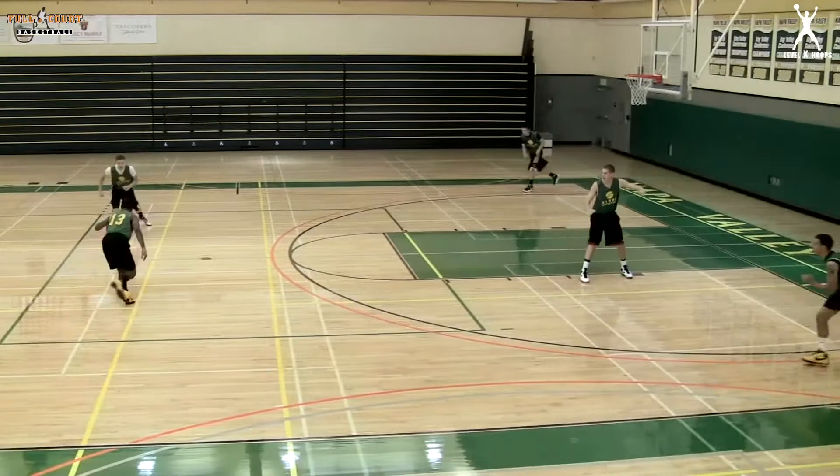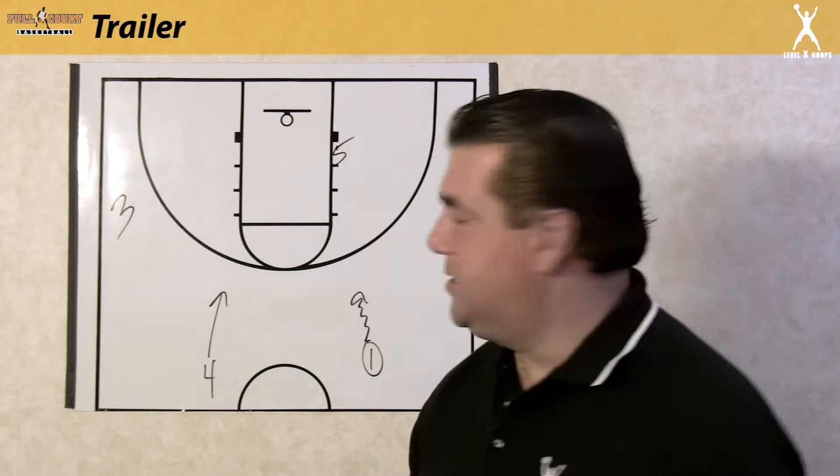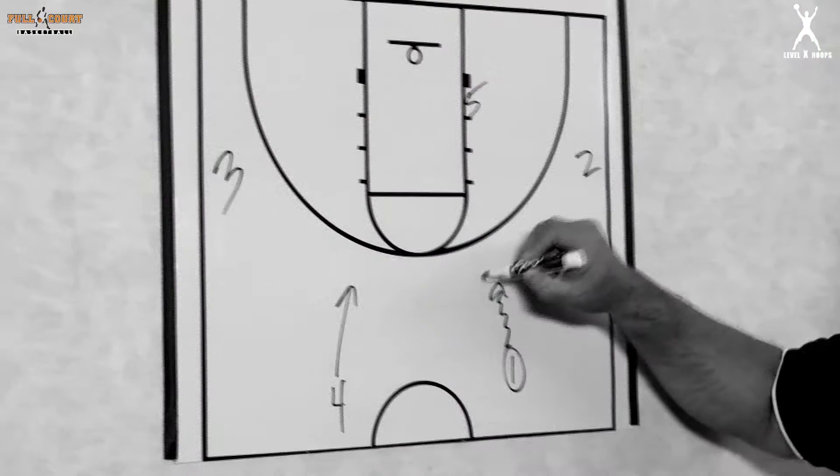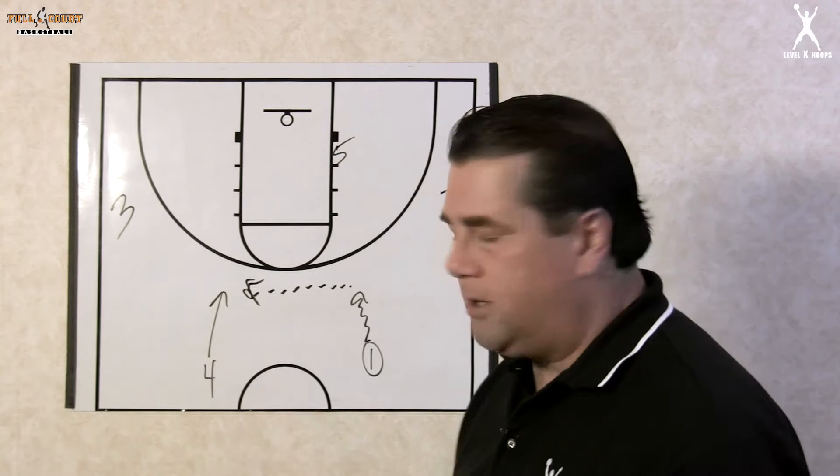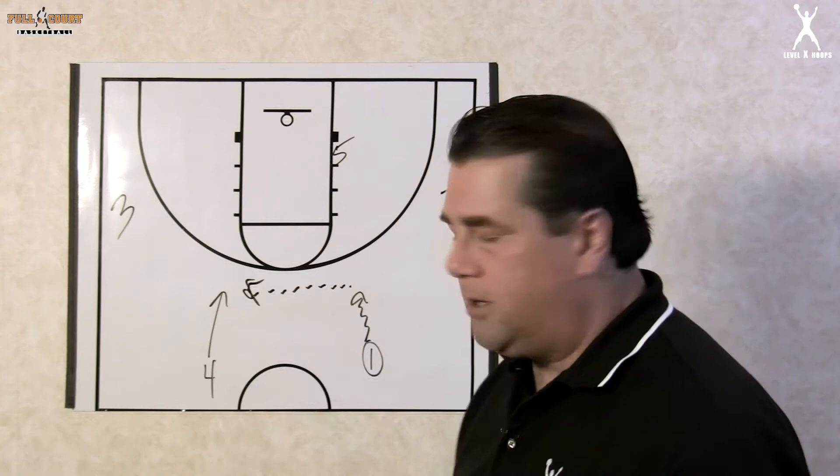Our last option to get into the Princeton series out of transition will be to use the trailer entry. Here we see one bringing the ball up the floor and looking to reverse the ball to the trailer, number four, across the top. When this happens, five has a couple of options. Anytime the ball is reversed across the top, five can set a back screen for the passer.